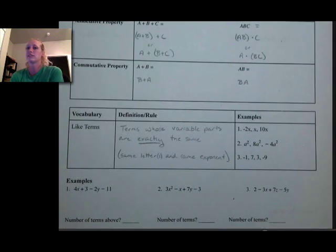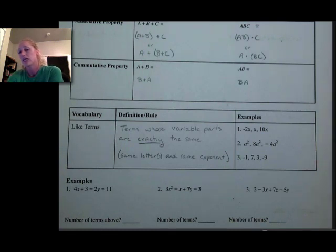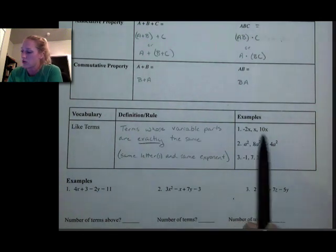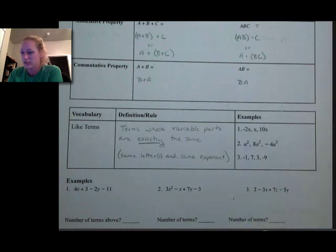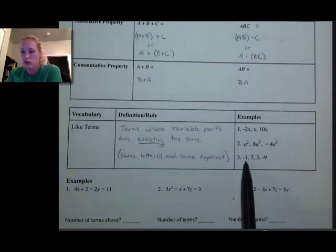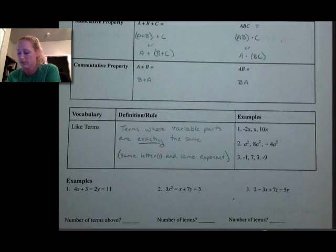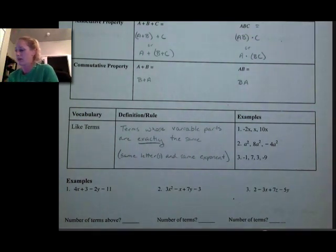Another big piece to simplifying is combining like terms. Like terms are things that have the exact same variable parts — the same letters and the same exponent. These are all like terms because they all have x's. These are all like terms because they all have a squared. And these are just integers — they're constants — and yes, they're all like terms because they match in the sense that they don't have variables.